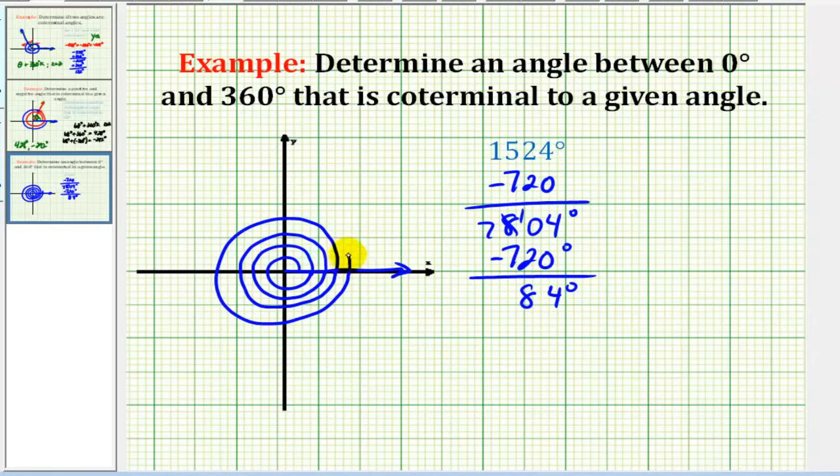So it's going to be somewhere, maybe somewhere in here. And that's really the key to answering this question. We know this is the terminal side to 1524 degrees. But the key is we've rotated another 84 degrees from this positive x-axis to reach 1524 degrees. So 84 degrees would be the measure of the angle that we're looking for that's coterminal to the given angle between zero and 360 degrees.